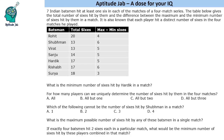Welcome to Aptitude. This is a number puzzle. There are seven batsmen who hit at least one six in each of the matches in a four-match series. A table gives the total number of sixes and the difference between the maximum and minimum number of sixes hit in a single match. Each player hit a distinct number of sixes in the four matches he played.